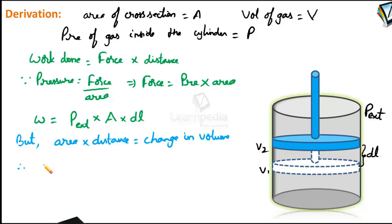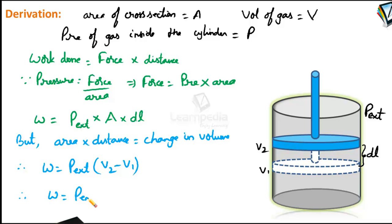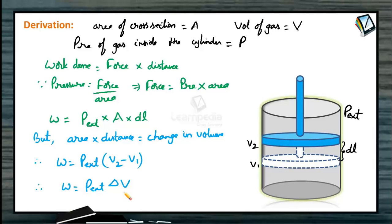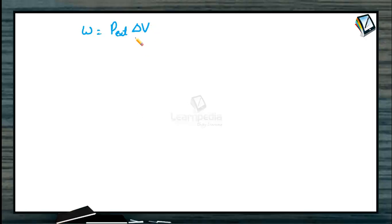Therefore, W equals P multiplied by change in volume, that is V2 minus V1, or W equals P·ΔV. So we conclude that the work done during an isothermal irreversible process is equal to P_external × ΔV, simply P·ΔV.